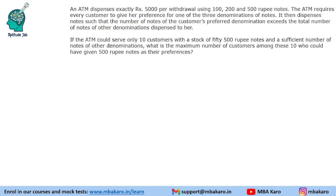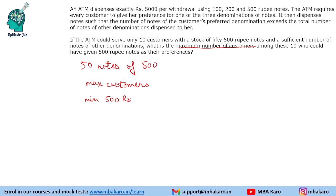Question 2: if the ATM can serve only 10 customers with a stock of 50 notes of 500 rupees and a sufficient number of notes of other denominations, what is the maximum number of customers among these 10 who could have given 500-rupee notes as their preference? There are 10 customers to be served and 50 notes of ₹500. To serve the maximum number of customers, you must give the minimum number of 500-rupee notes per customer, which is 8 as we saw.